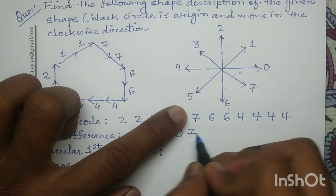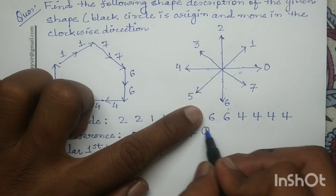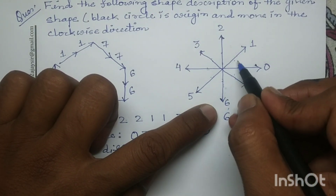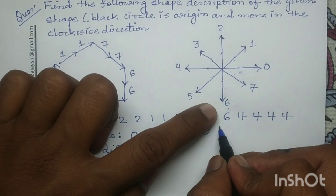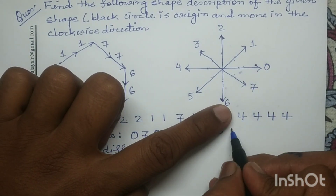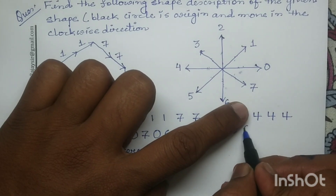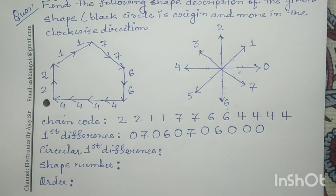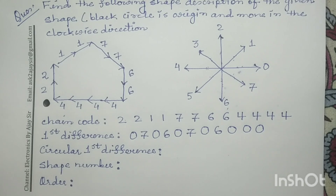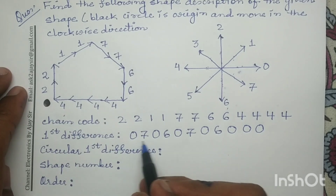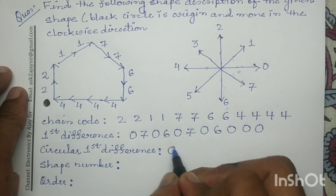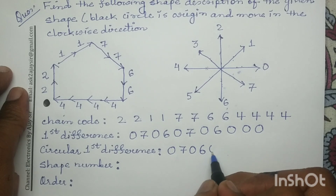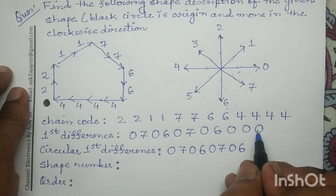From 6 to 6, the difference is 0. From 6 to 4, in the anticlockwise direction the difference is 6. From 4 to 4, the difference is 0, and again from 4 to 4 the difference is 0. So after determining the first difference, in order to determine the circular first difference, we first write the first difference: 0 7 0 6 0 7 0 6 0 0 0.